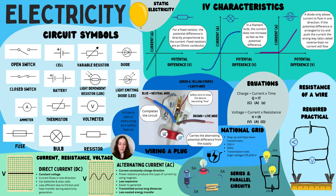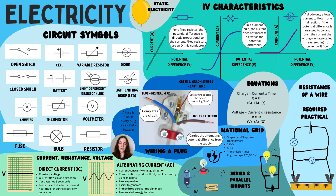In a series circuit, there is one continuous loop of wire connecting all the components — the current is the same throughout, but the potential difference is shared. In a parallel circuit, components are connected in separate loops and branches — the voltage is the same across each branch, but the current is shared. There is also a required practical which measures the resistance of a wire by varying the length of wire and using the equation V = IR, recording both voltage and current.